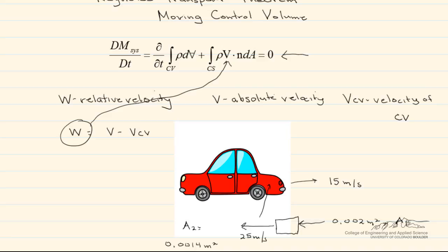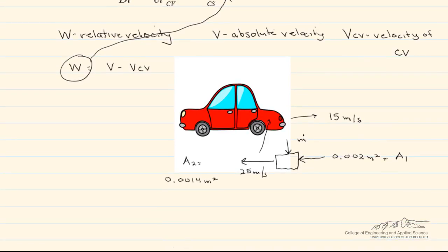What we want to know is how much fuel enters the engine in kilograms per second. The air entering the engine, rho 1, is equal to 0.8 kilograms per meter cubed, and the exhaust density, rho 2, is equal to 0.43 kilograms per meter cubed.